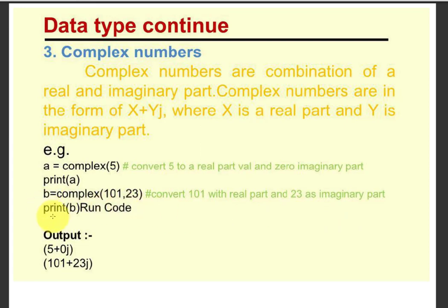Let's execute print b. When you execute that program, you will get 5 plus 0j, and next b will execute as 101 plus 23j. This is the way of using complex numbers.